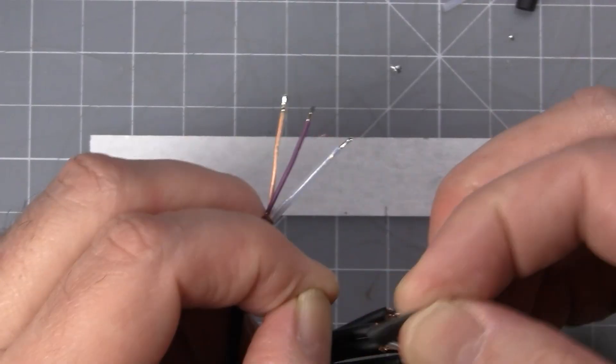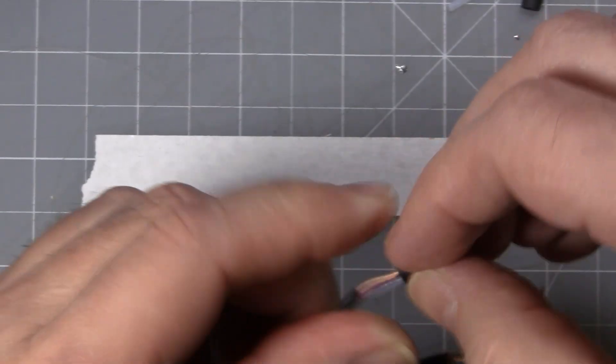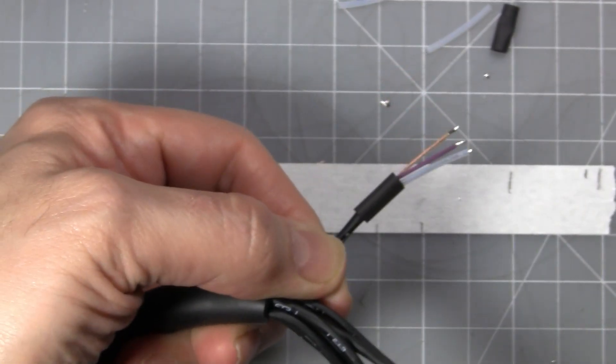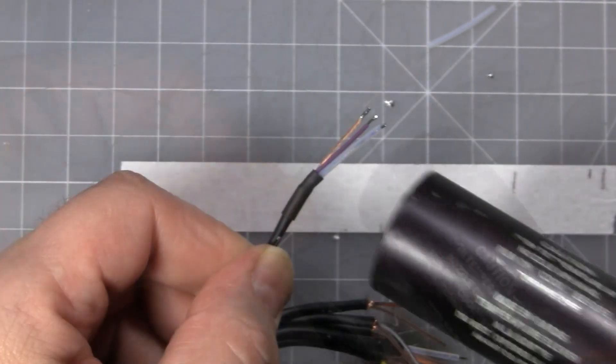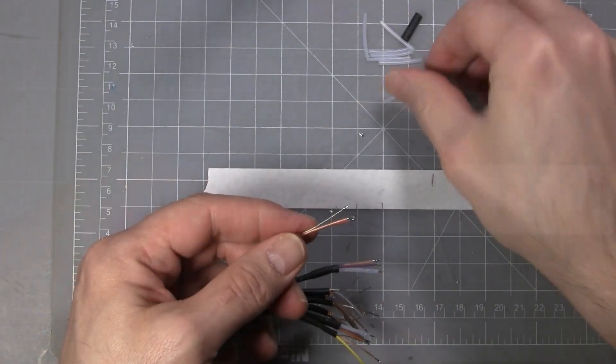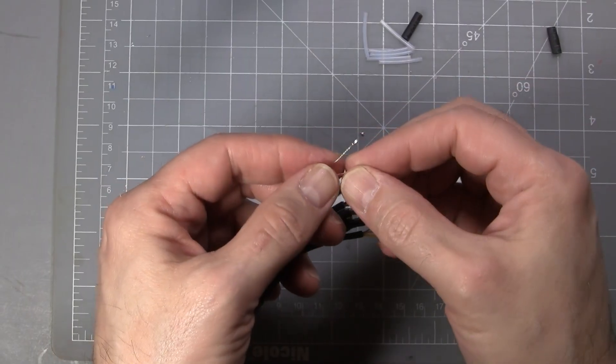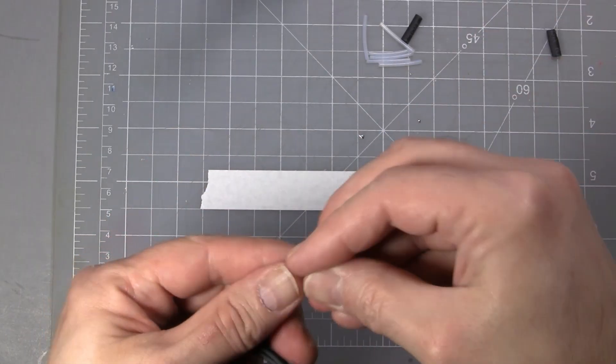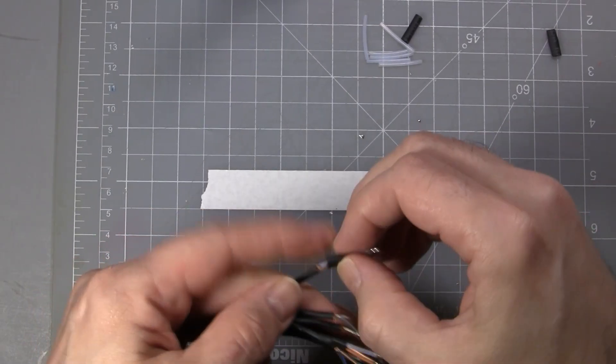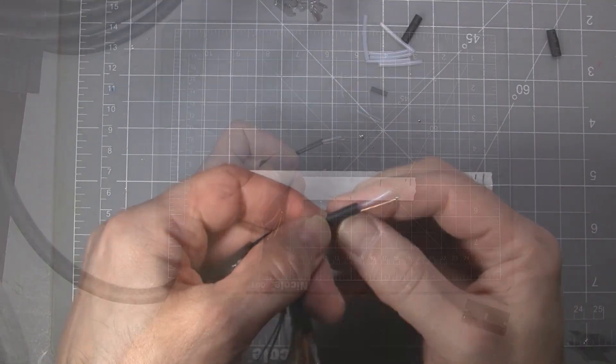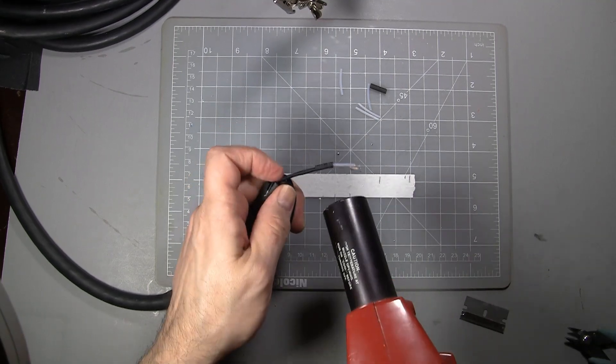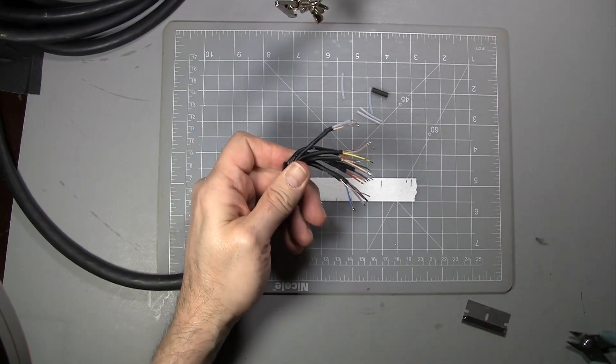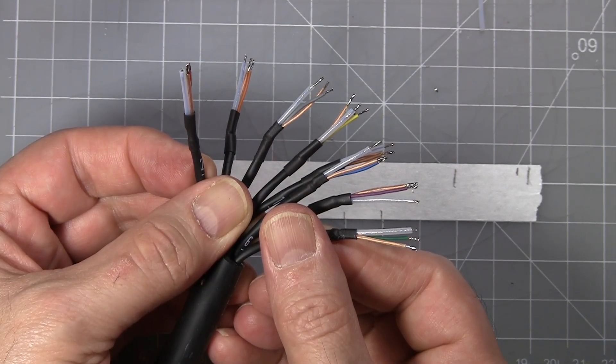Now I'm going to add the individual channel shrink tubing to hold the Teflon tubing on the ground or drain wire. Now that I have all the wires prepped, it's time to solder the DB25 connector.